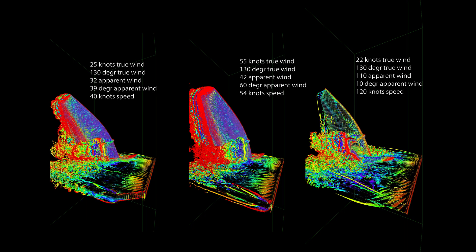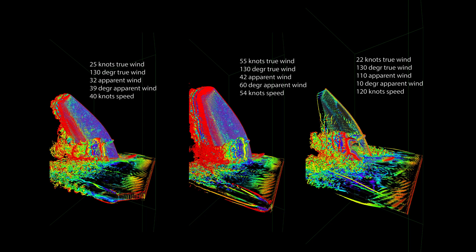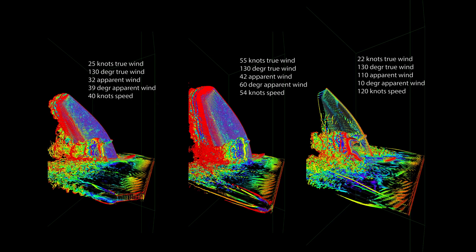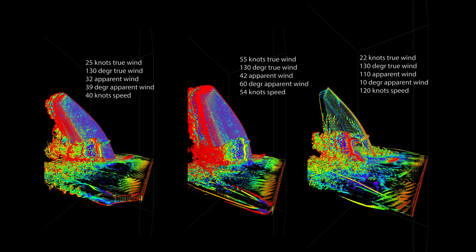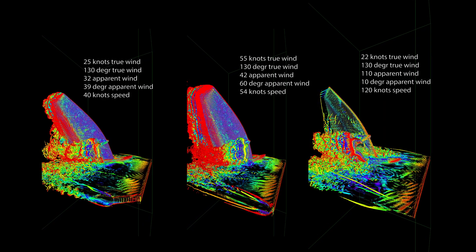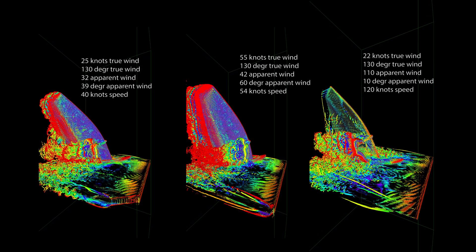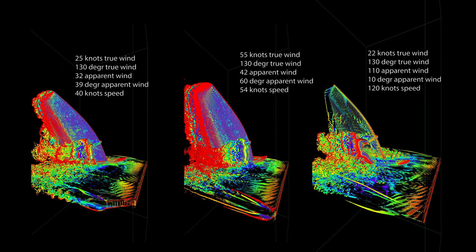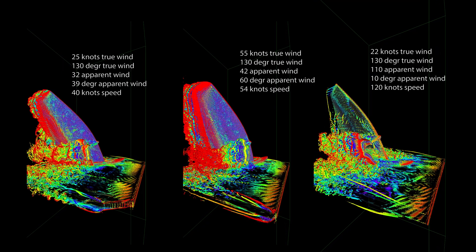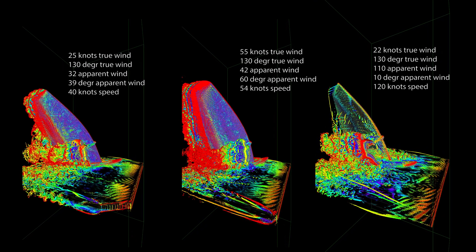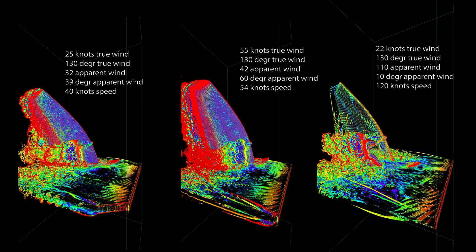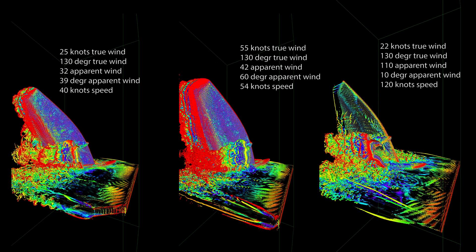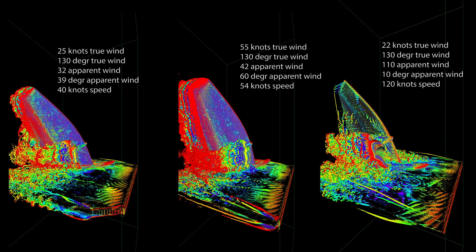Conclusion. In all cases, the angle of apparent wind remains the same regardless of the wind or surface speed. In both cases of the windsurfing, the angle of apparent wind is so high that the sail stalls and does not act as a wing.